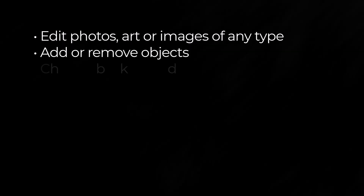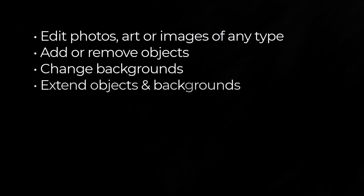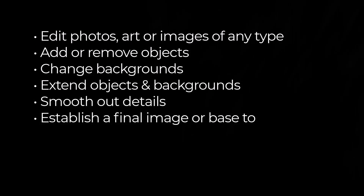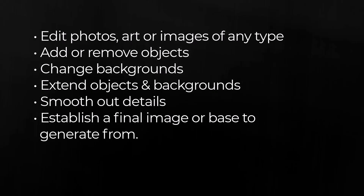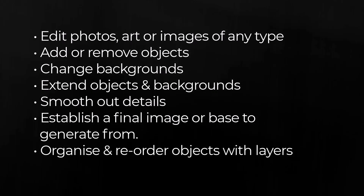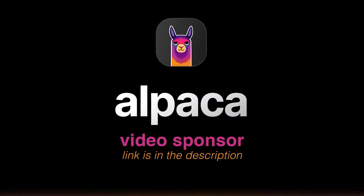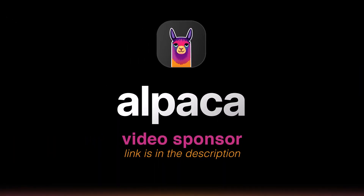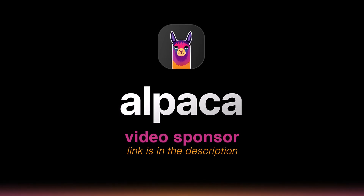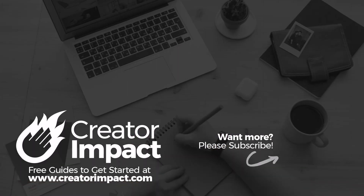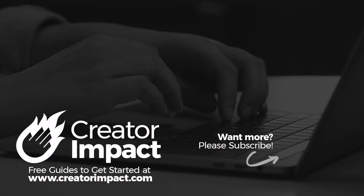You can edit photos, art, or images of any type by adding or removing objects, changing backgrounds, extending objects and backgrounds, smoothing details, and creating a base image to generate from. This is all super easy as you can organize and reorder objects with layers — a level of control you won't normally get in an AI generator. Check out Alpaca's Chroma tool if you haven't already — these new tools make it a lot of fun. Thanks for watching, and I hope to see you again next time.